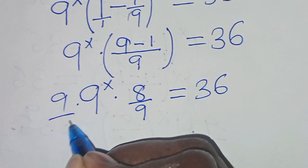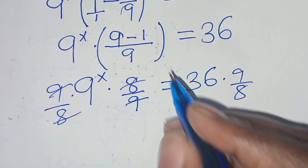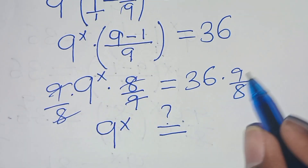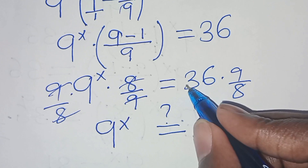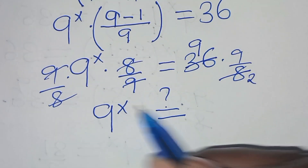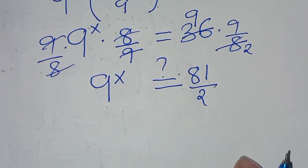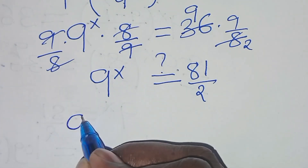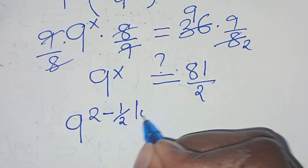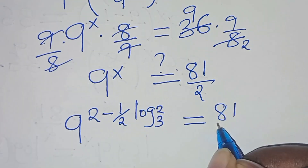Multiplying both sides by 9 over 8, we have 9 to the power of x equals 36 times 9 over 8. Simplifying: 36 divided by 4 is 9 and 8 divided by 4 is 2, so 9 to the power of x should give us 81 over 2. Now let's substitute the value of x: we have 9 to the power of (2 minus one-half log base 3 of 2), which should give 81 over 2.